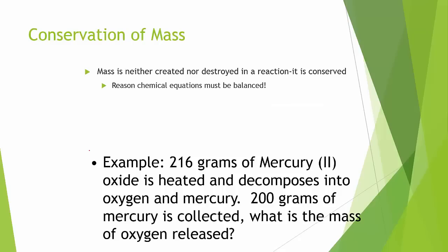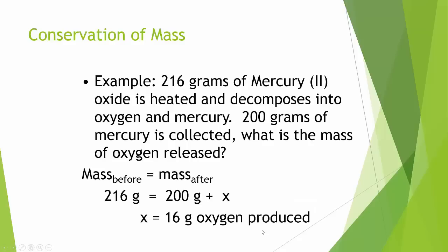Conservation of mass. That's what it sounds like. It's conserved. We don't create a mass nor destroy it in a reaction. It is conserved. So when we start balancing equations, this is what we need to know. Okay, here's my example. So if I have, you don't have to write all this, but look at this. If I have 216 grams of mercury, it's heated, decomposed, what's the mass of the oxygen released? Okay, so look at this is what I need to know. If I notice here, mass before equals mass after. So if I had 216 grams before, if I had 200 grams, I know that this amount has to equal the before amount. So therefore, that's how I know 16 grams of oxygen was produced. We can use this to identify unknowns just because we know that mass is conserved.